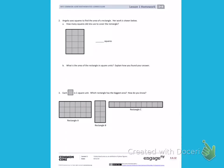This is Module 4, Lesson 1 on the back. Number 2. Angela uses squares to find the area of a rectangle. Her work is shown below. A. How many squares did she use to cover the rectangle?